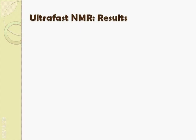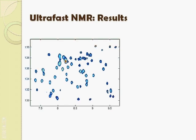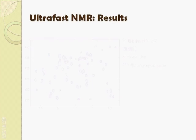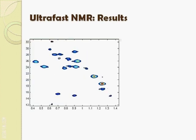We conclude this presentation by presenting some results obtained using ultrafast NMR. Here we can see an N15 ubiquitin spectra at 2.3 millimolar concentration. This 2D HMQC spectrum was acquired during 60 milliseconds using a cryoprobe on an 800 megahertz spectrometer. Here we see a similar 2D spectrum, this time the result of an HSQC sequence carried out on a C13 protein A in a 1 millimolar concentration. The total acquisition time was 50 milliseconds, obtained using a cryoprobe on an 800 megahertz machine.